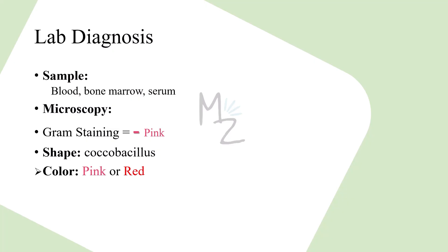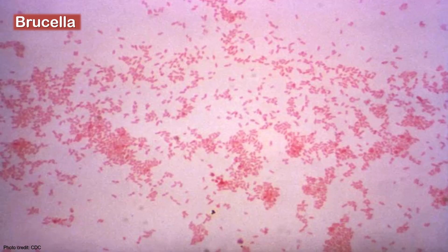Lab Diagnosis: For brucellosis, samples needed are blood, bone marrow, and serum. On microscopy with gram staining, the bacterium appears gram-negative (pink) and coccobacillus in shape. Under the microscope, Brucella has no motility apparatus such as flagella, so no motility is visualized.